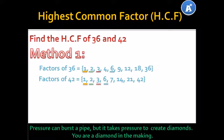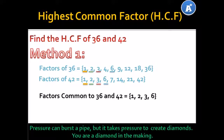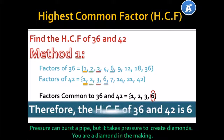So, the common factors of 36 and 42 are 1, 2, 3 and 6. Now, we are looking for the highest common factor — which is the highest among these factors that we have listed? You are right: 6 is the highest common factor. Therefore, the HCF of 36 and 42 is 6.